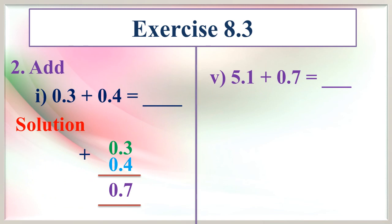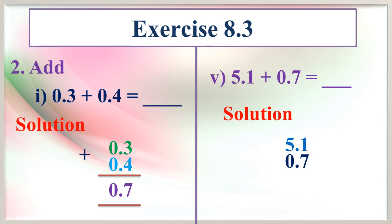Next: 5.1 plus 0.7 equals dash. Now we are going to find the solution. Write it in vertical: 5.1 and 0.7. Now add. 5.1 plus 0.7 — what is the answer? That is 5.8.